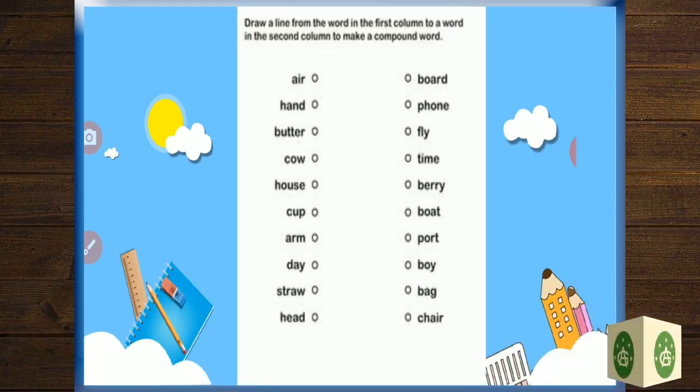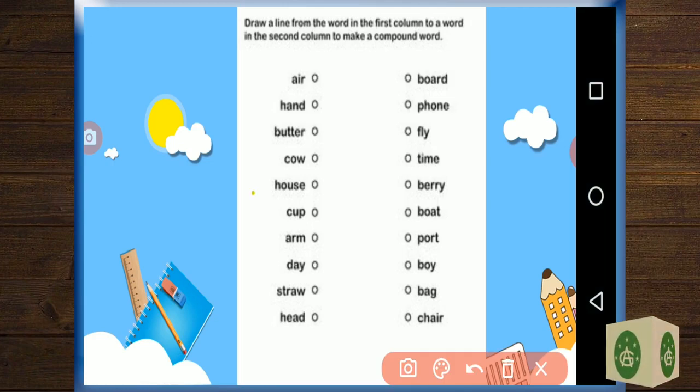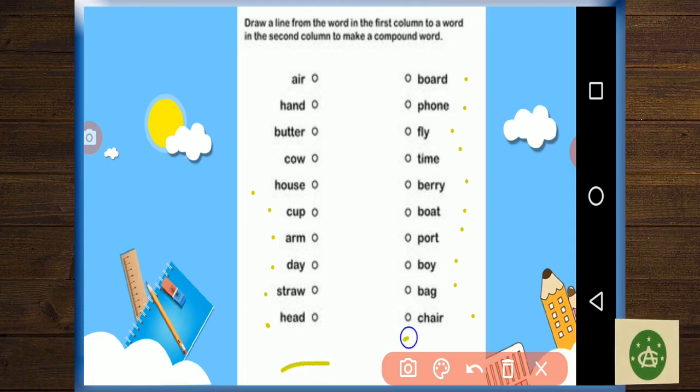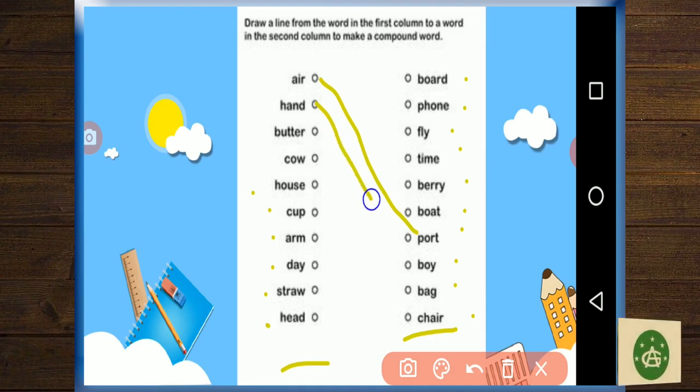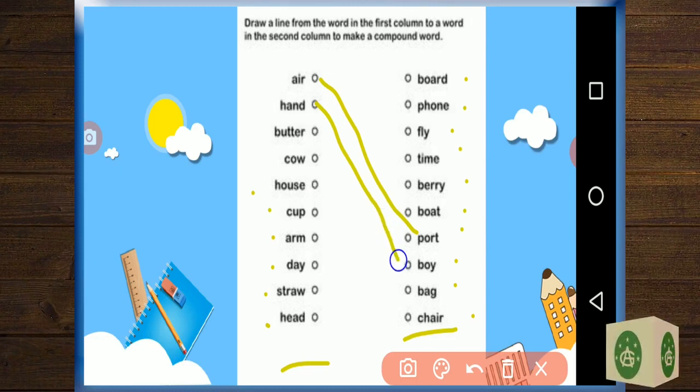Let's see, now we have got something to do. Let's see what you can find. We have got the word air, hand, butter, cow, house, cup, arm, day, straw, and head. And we have got on the other side board, phone, fly, time, berry, boat, port, boy, bag, and chair. I hope most of the words are easier ones for you to understand. We need to draw a line from the words in the first column to the words in the second column to make a compound word, okay.